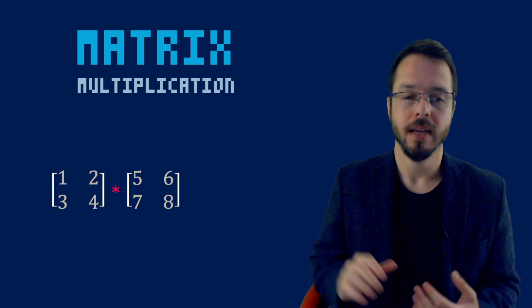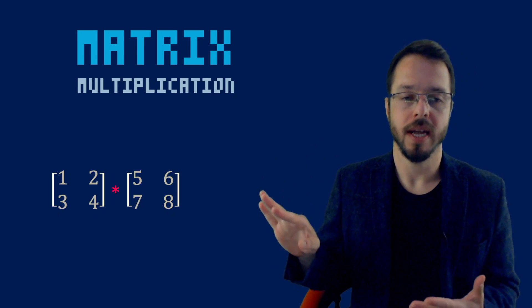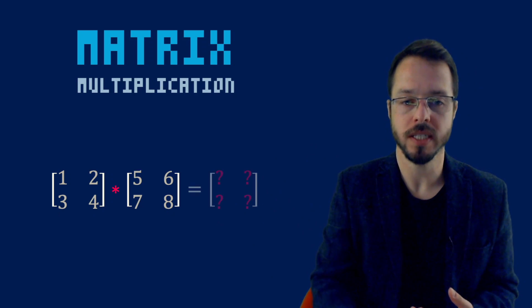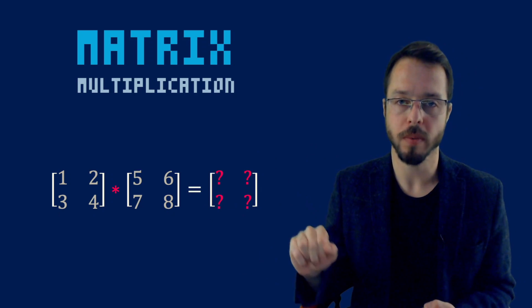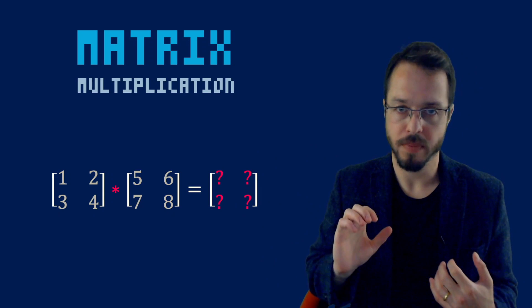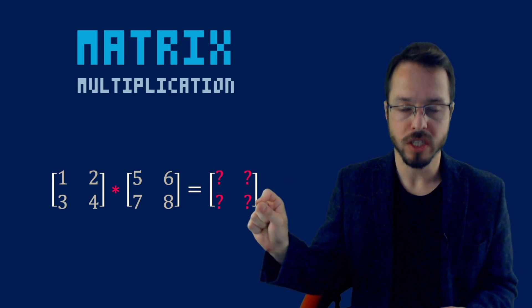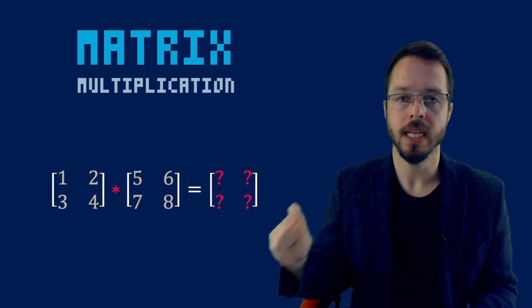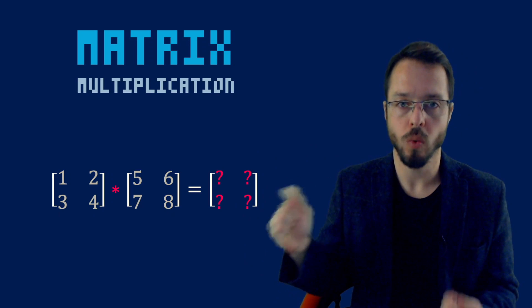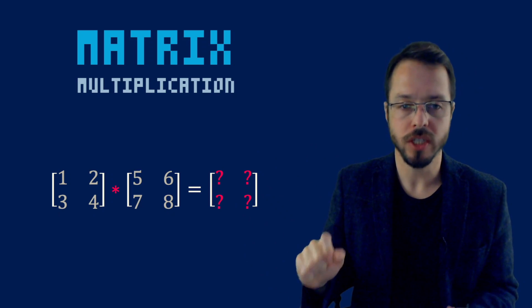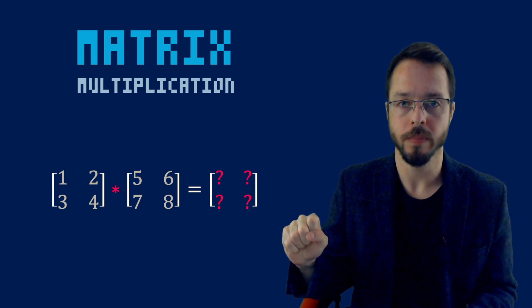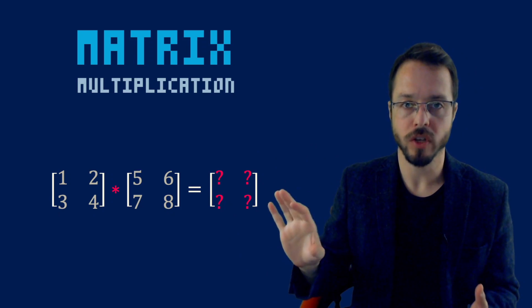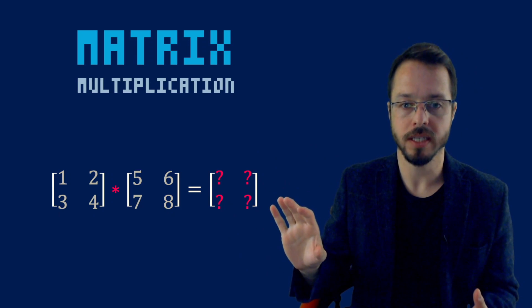Matrix multiplication. Let's look at how we can multiply two matrices and get a resulting matrix. I just want to say something right off the bat: matrix multiplication is not an element-wise operation. It is not simply multiplying element by element. The algorithm for matrix multiplication is a little bit more elegant than that.